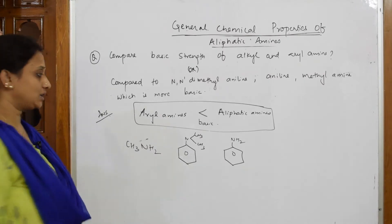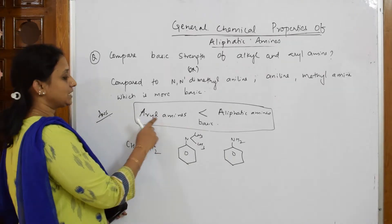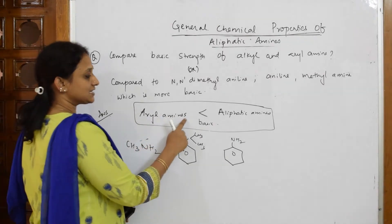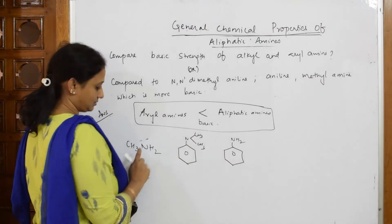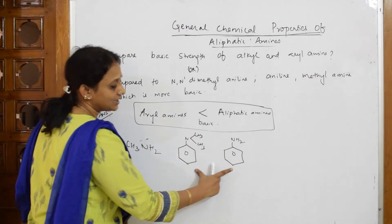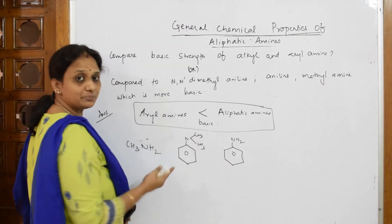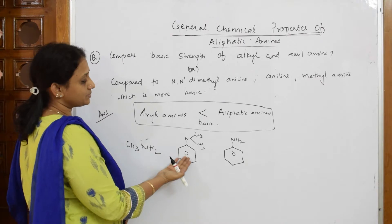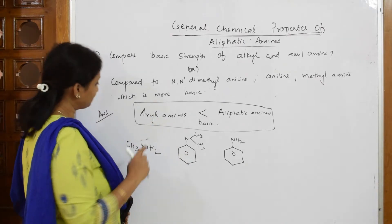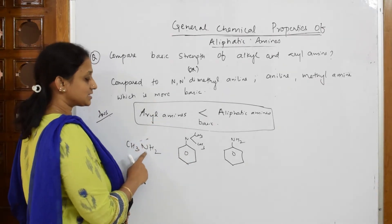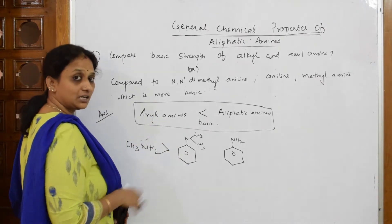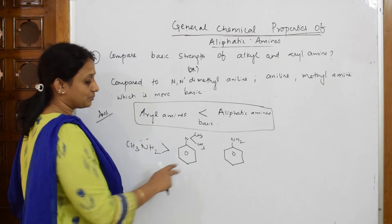Now they are asking which is more basic. Recall the concept: aryl amines are less basic than aliphatic amines. Methylamine is an aliphatic amine, while aniline and N,N-dimethylaniline are aryl amines — they have a benzene ring. So methylamine is more basic than the aryl amines.